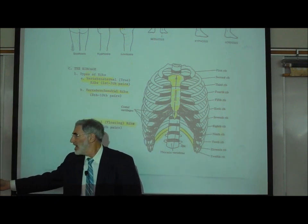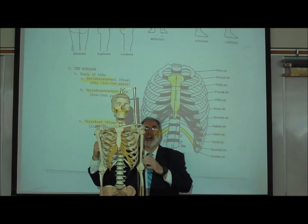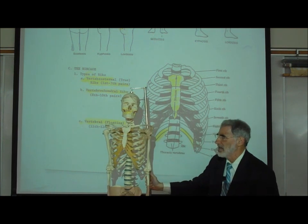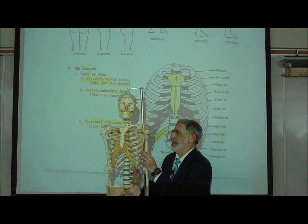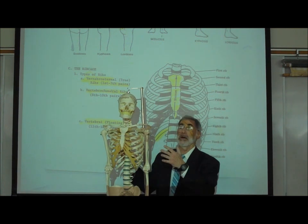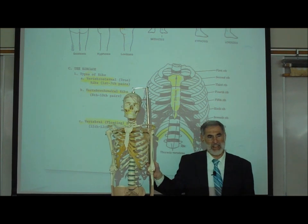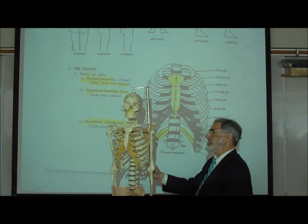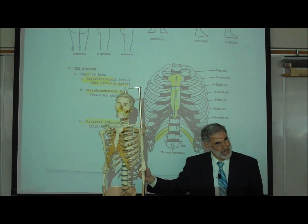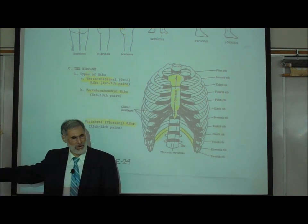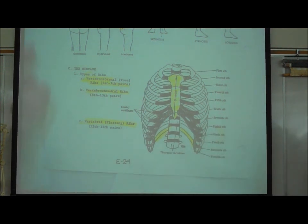The space between the ribs is called the intercostal space — another word for rib is costal, and inter means between. The intercostal space is important clinically: when listening to the lungs or positioning leads for an electrocardiogram recording, you work in the intercostal spaces of the ribs.